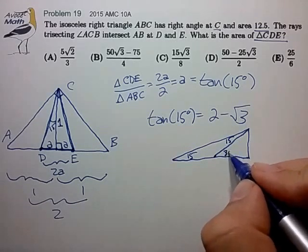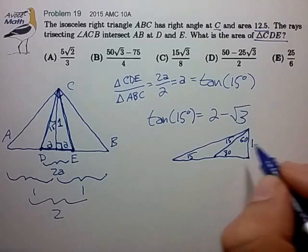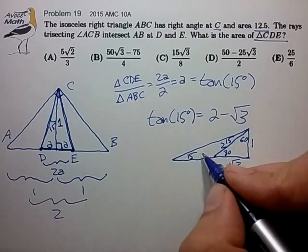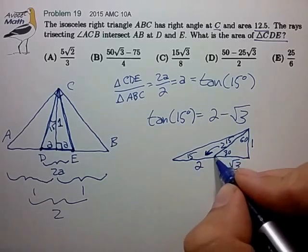And that creates a 30, 60 right triangle, which has lengths 1, 2, and root 3. And since this is isosceles, this distance of 2 is also the length of this segment.